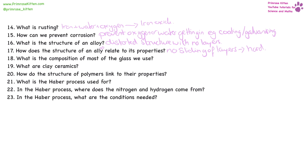What is the composition of most of the glass we use? That is silicon dioxide, which is sand. What are clay ceramics? These are made from a starting material of clay and sand. These are then baked in a hot oven and turn out to be very hard, very durable materials.